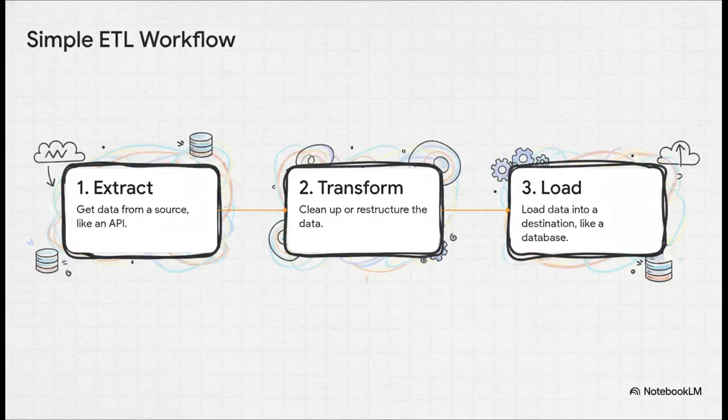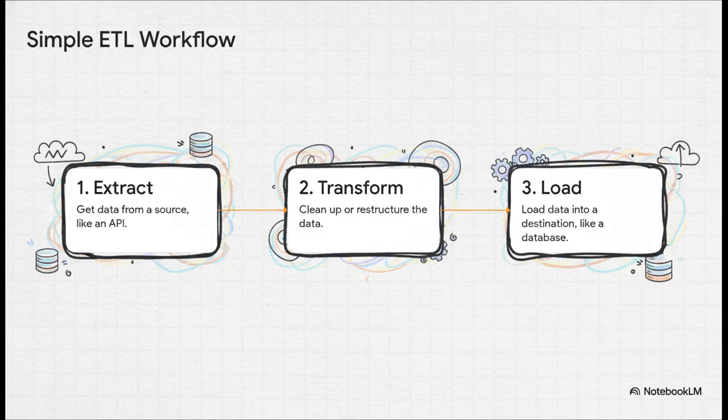It's the blueprint for your entire data process, and this whole concept is a perfect fit for a classic ETL workflow. You extract some data, you transform it, and then you load it somewhere. You absolutely cannot load the data before you've transformed it — a DAG is what enforces that logic. It guarantees that these steps run in the right order every single time.